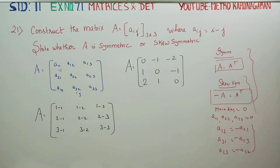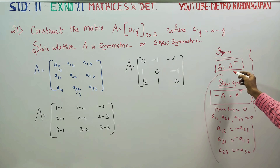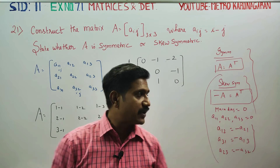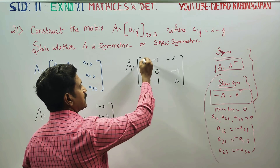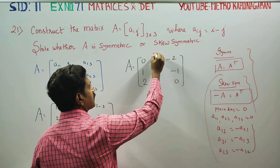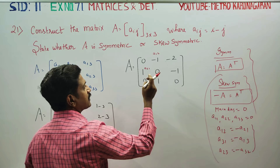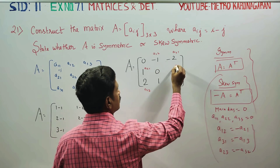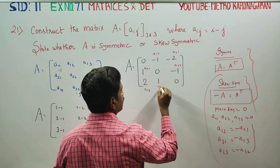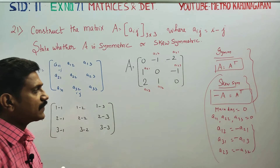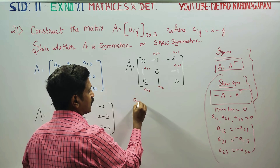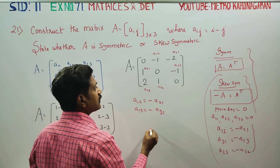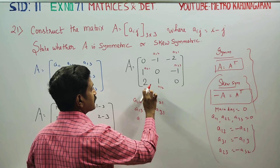Here is a shortcut. For a skew symmetric matrix, the elements satisfy: a12 is equal to minus of a21, and a13 is equal to minus of a31. You can mark these pairs and verify the sign relationship between corresponding off-diagonal elements.